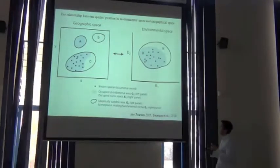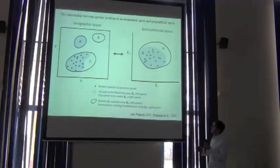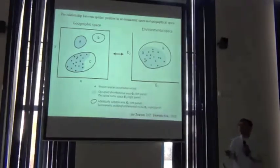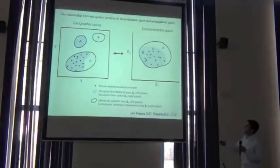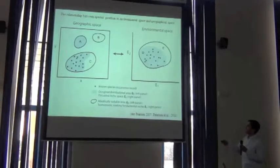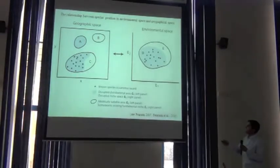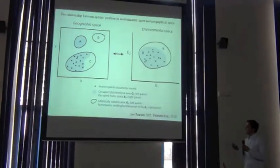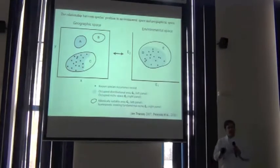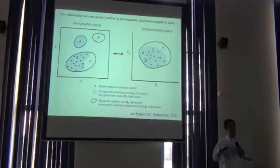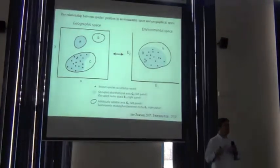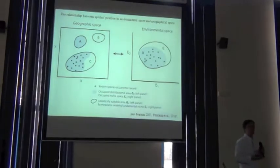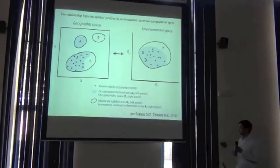Another really important concept is what we're going to term the abiotically suitable area. I've represented that by these closed oval spaces here — these are the areas in the landscape that are actually suitable for the species. So if it could disperse there, or if there was no biotic competition, these are abiotically suitable.